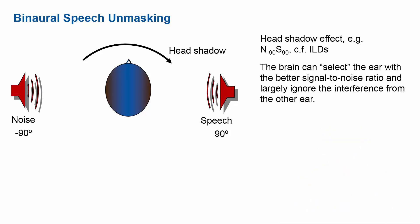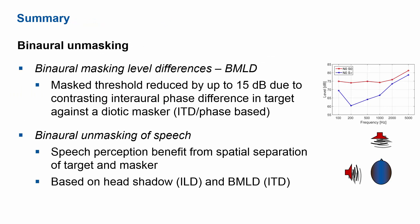To summarize our excursion into binaural unmasking: there are strong benefits from having two ears — masking level differences of up to 15 dB when introducing a π phase shift into the signal while keeping the noise identical on both ears. In many other situations we also gain strong benefits from having different phases in the target versus the noise. Binaural unmasking isn't only for single tones — we also benefit strongly for speech understanding, with gains up to 10–13 dB possible when noise and speech are in different locations, based on head shadow and BMLD effects, particularly in diffuse listening situations in rooms.